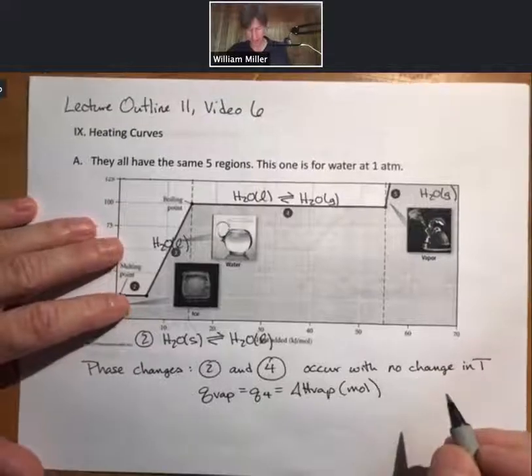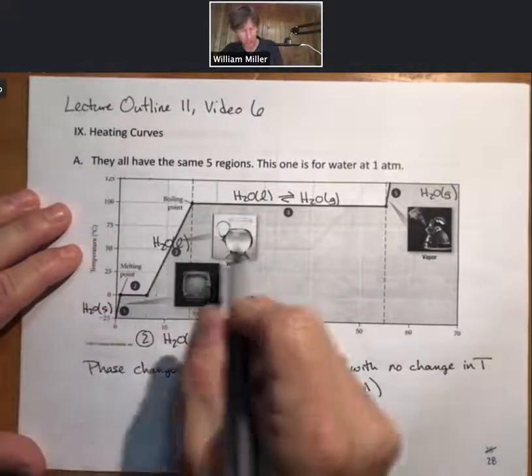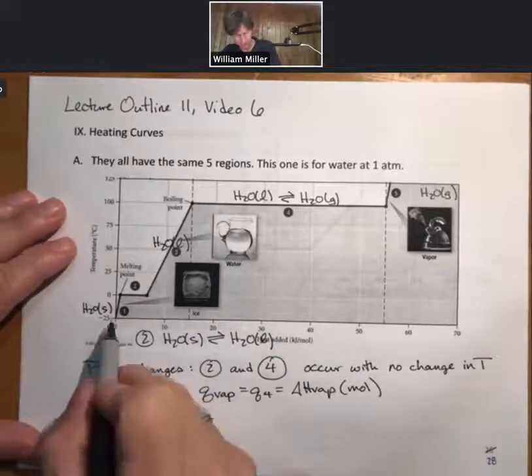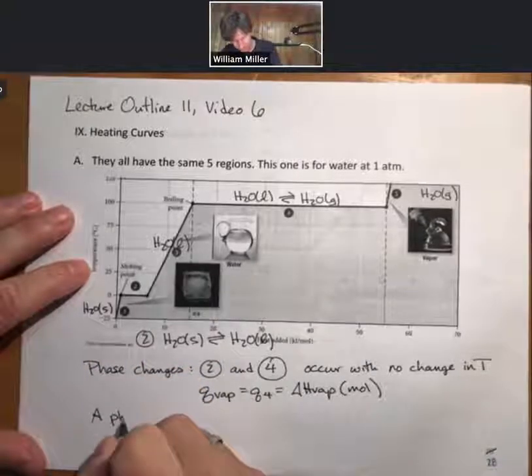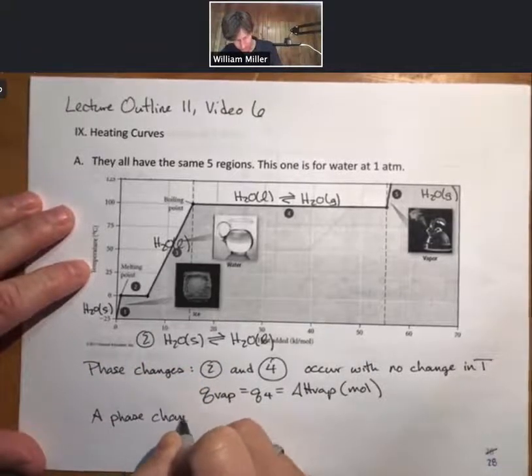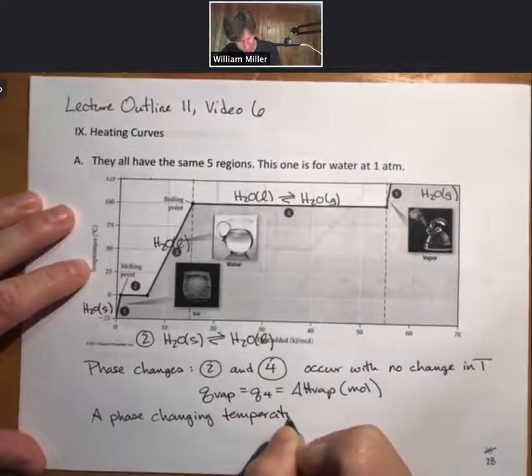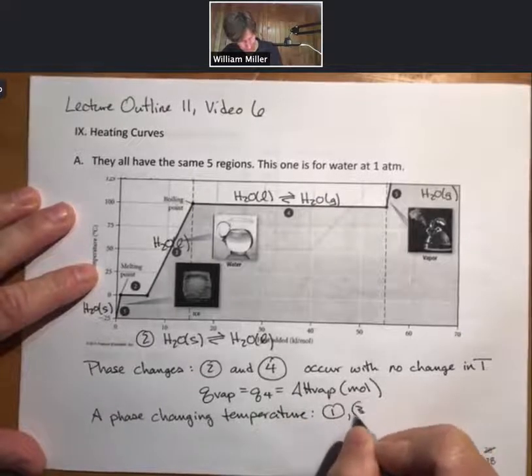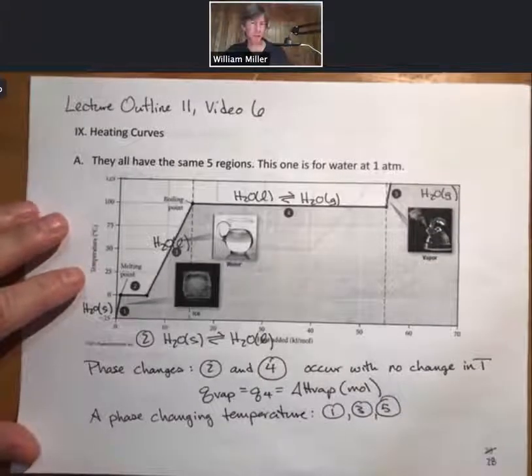That'll allow us to calculate the kilojoules of energy that it takes to do this transition. And there's no temperature change in here. Hint, hint. Now the other ones are going to be solid, liquid, and gas, a phase changing temperature because temperature is changing. Those are going to be regions one, three, and five.